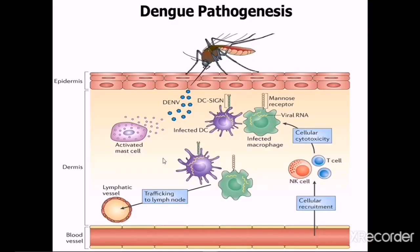Regarding pathogenesis: the virus enters the body and invades macrophages and dendritic cells, where it replicates and activates cell-mediated immunity. Infected local cells then migrate from the site of infection to the lymph nodes, where monocytes and macrophages are recruited and become targets of infection. The infection is amplified and virus is disseminated through the lymphatic system, with viremia developing within 24 hours.